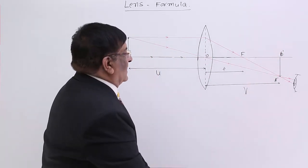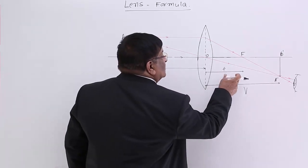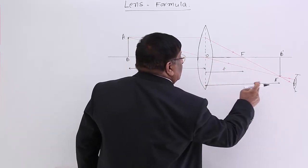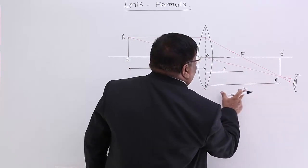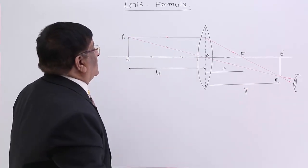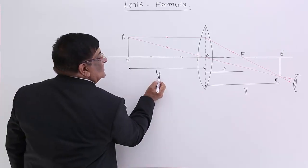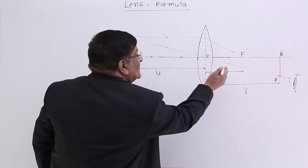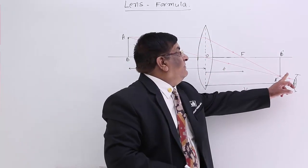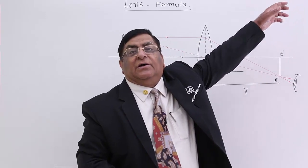Now we need to find out: if the focal length has a certain value, what will be the distance of the image? The object is placed at distance U, the lens has focal length F, and we want to find where the image will be formed — whether at 10 cm, 20 cm, 50 cm, or nowhere.